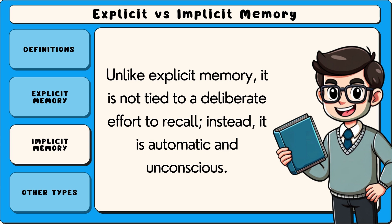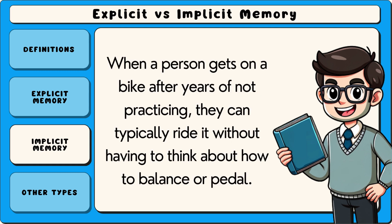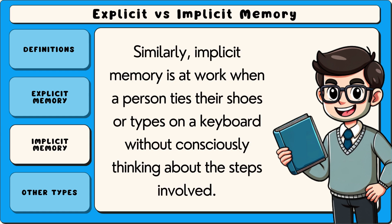Instead, it is automatic and unconscious. One common example of implicit memory is riding a bicycle. When a person gets on a bike after years of not practicing, they can typically ride it without having to think about how to balance or pedal. This ability comes from implicit memory, which stores motor skills learned through repetition. Similarly, implicit memory is at work when a person ties their shoes or types on a keyboard without consciously thinking about the steps involved.